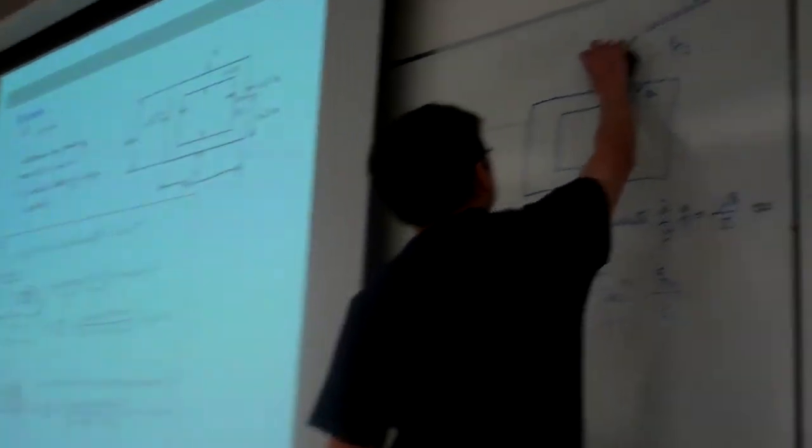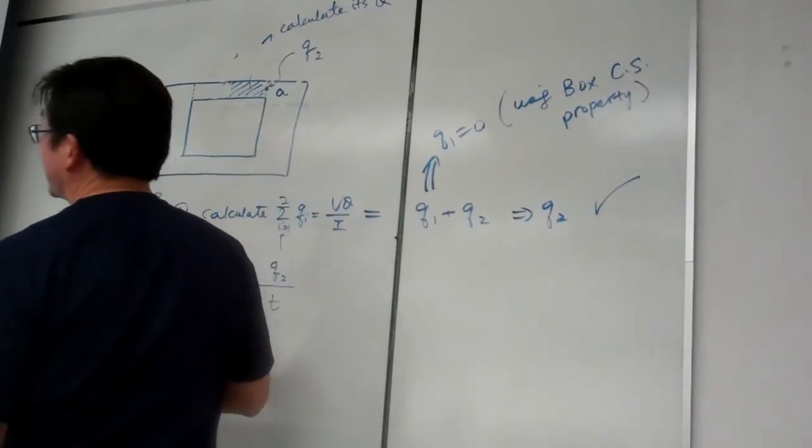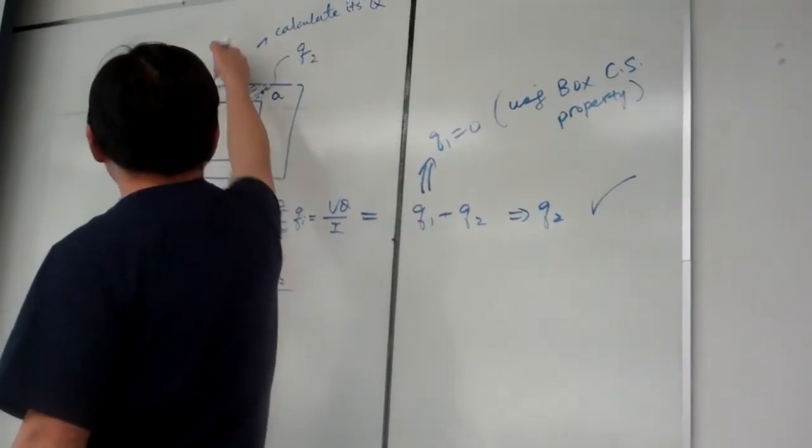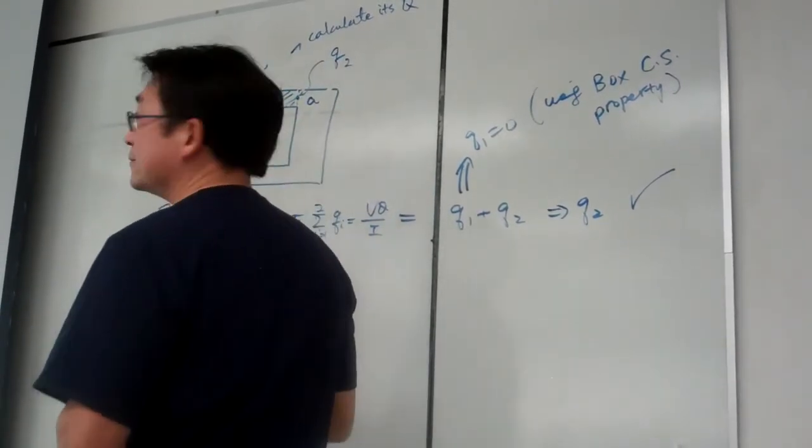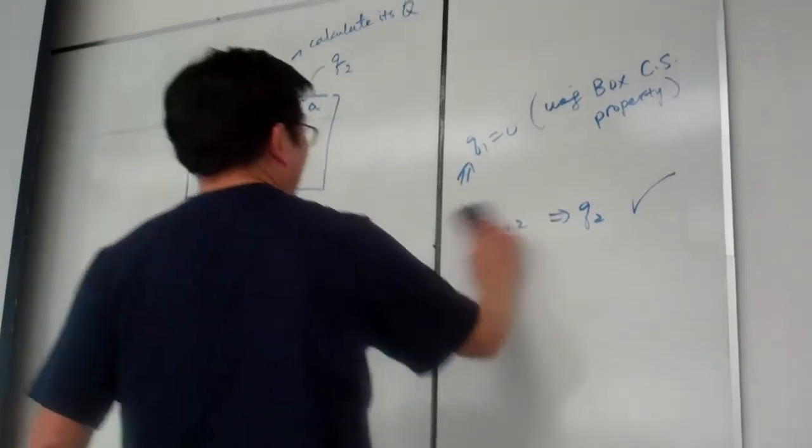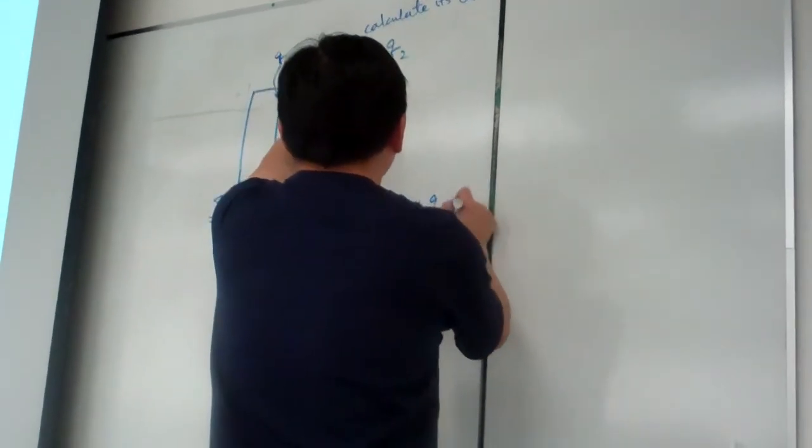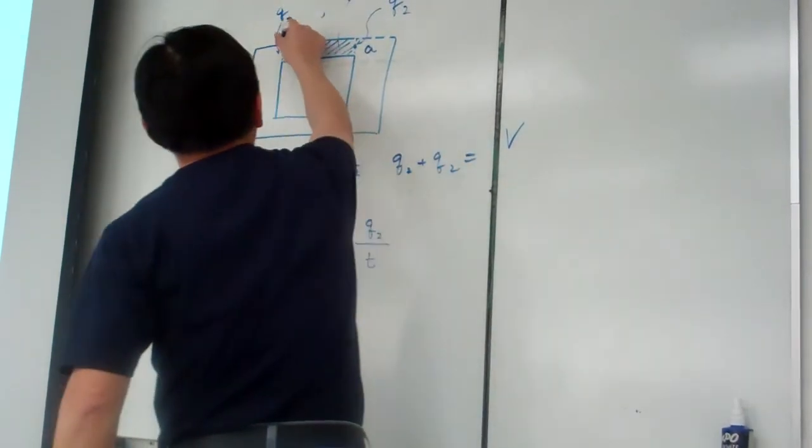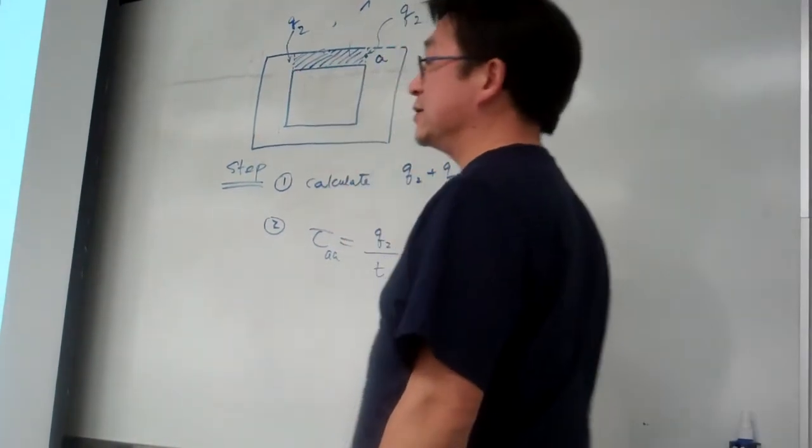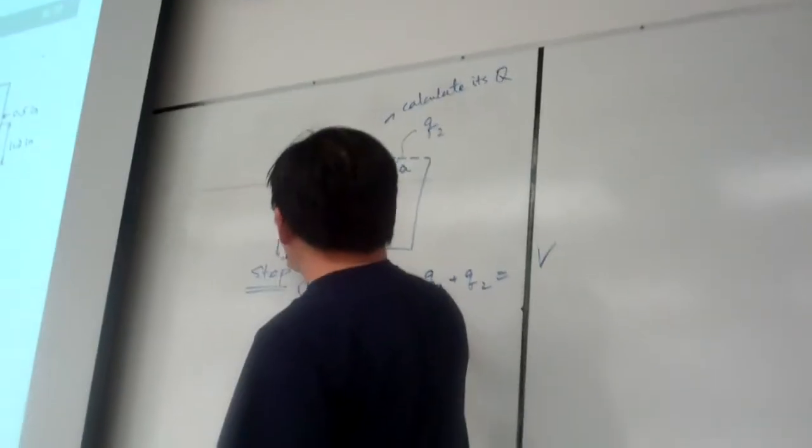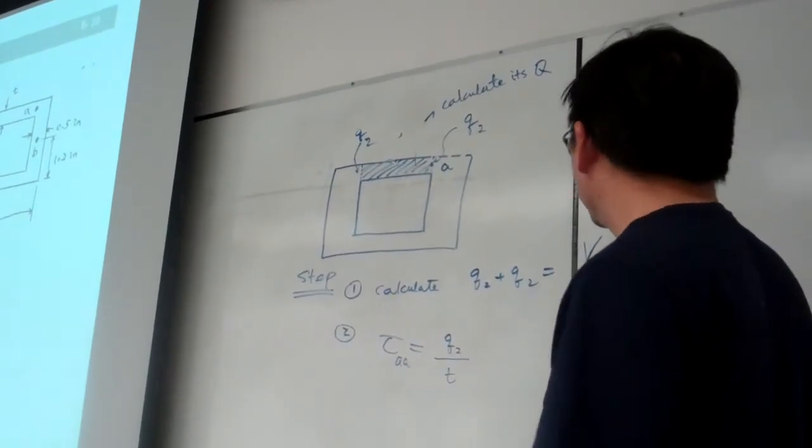This is the first approach. The second approach is this. We can use symmetry. For example, if we're interested in here, so why not I make another cut here? Because the two cuts are symmetric with respect to the line of symmetry, here we assume that the shear flow here must be equal to that one. So, for this case, again, step one to calculate the total shear flow Q2 plus Q2 equal to VQ over I. What is the Q? Now, the Q is this one. The Q is the area not being cut. Now, we have two cuts here. Otherwise, if you want to go the wrong way, you can pick this shape for your Q. That will give you the same value.